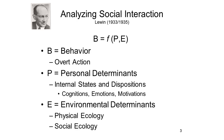By behavior, he meant the individual's overt behavior — behaviors that are publicly observable. By personal determinants, Lewin meant the individual's mental states and dispositions, such as knowledge, beliefs, feelings, motives, and attitudes. And by environmental determinants, Lewin meant to include all the factors that impinge on the individual from the outside, including aspects of the physical environment and aspects of the sociocultural environment.